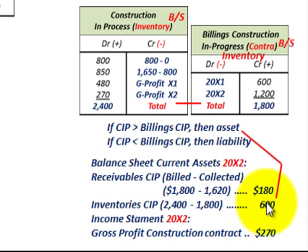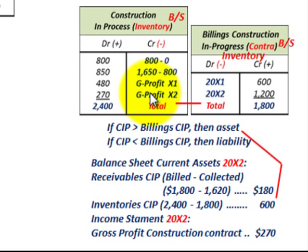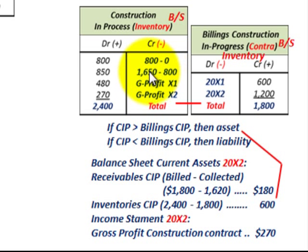To summarize: when dealing with long-term contracts, you have to set up two special accounts — the Construction in Progress inventory account, and the contra inventory account Billings on Construction in Progress. Construction in Progress includes cumulative costs plus accumulated gross profit. The Billings account reflects what was invoiced. Compare these two to determine asset versus liability on the balance sheet. That concludes our discussion on long-term contracts using the percentage of completion method on a cost-to-cost basis.